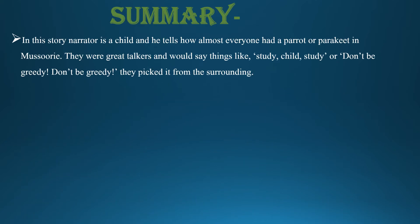Let us first discuss the summary of the chapter. In this story, the narrator is a child and he tells how almost everyone had a parrot or a parakeet in Missouri. Parakeet is a type of parrot that is very colorful and has a long tail. They were great talkers and would say things like 'study, child, study' or 'don't be greedy, don't be greedy.' These were the words that they picked from their surroundings.